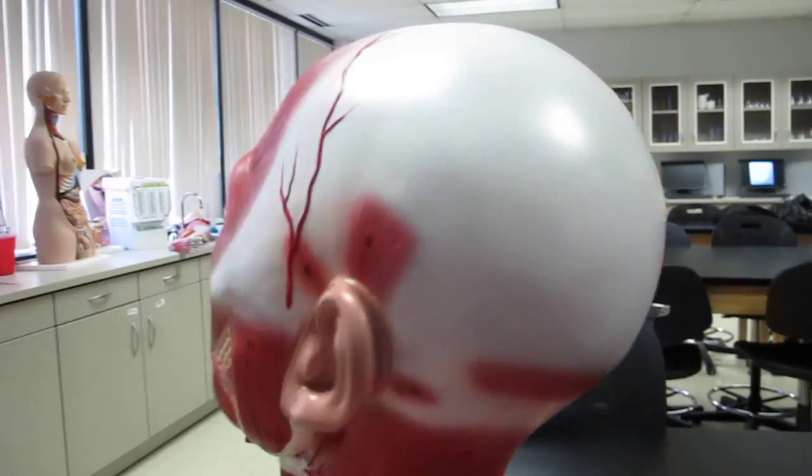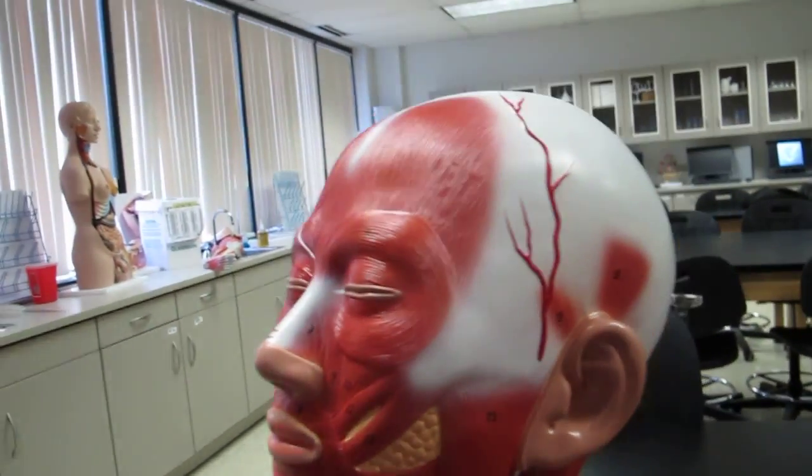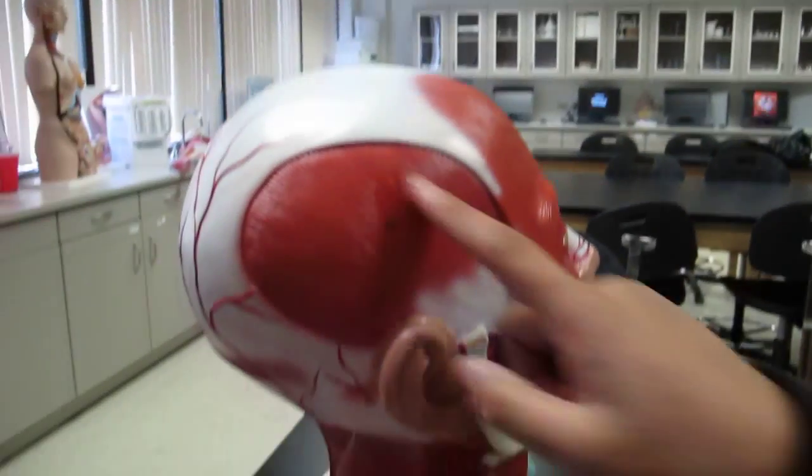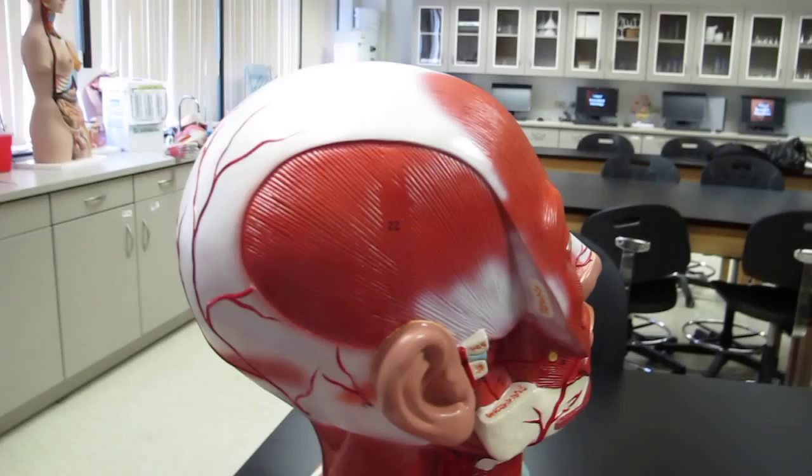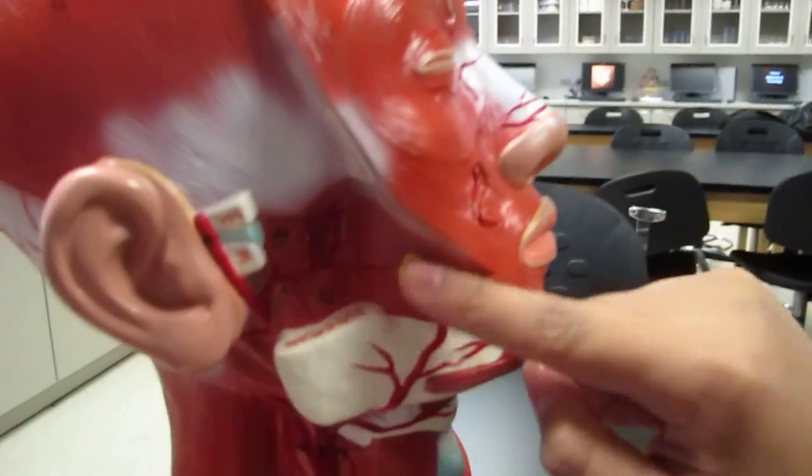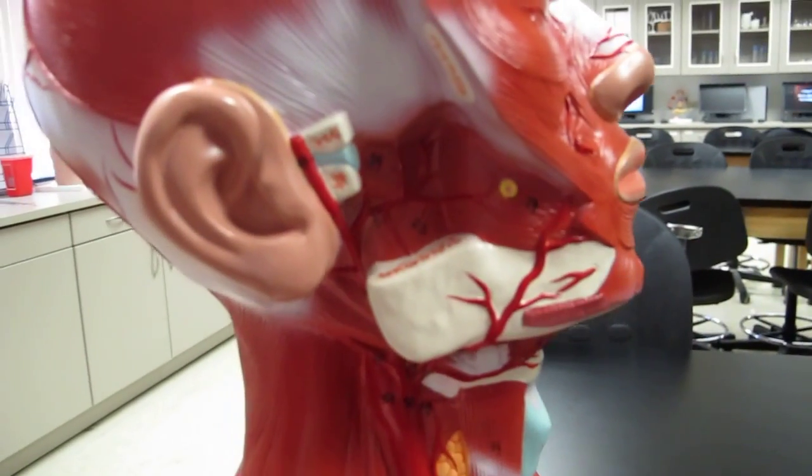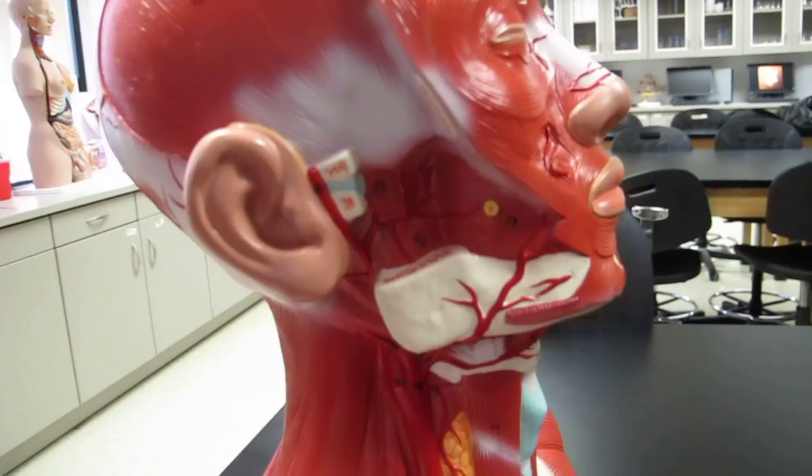Twenty-two is temporalis, seventeen is the buccinator. Okay, anything else here? Nope.